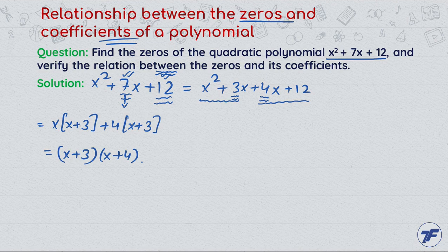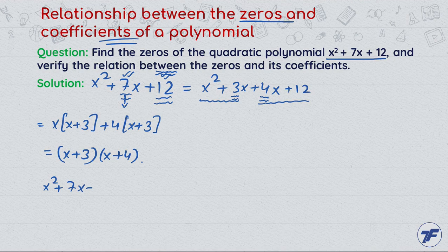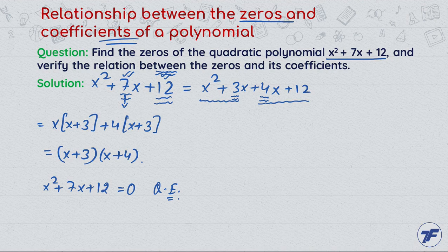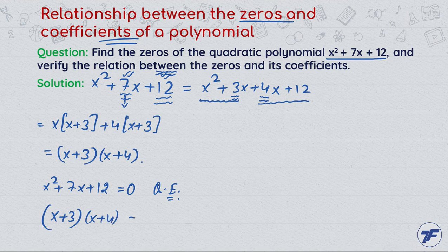So this is the factorization. And if I equate this quadratic polynomial to 0, if I say that x² + 7x + 12 = 0, this is a quadratic equation. And this means that (x + 3)(x + 4) = 0.